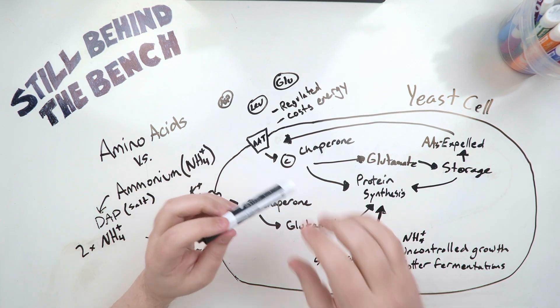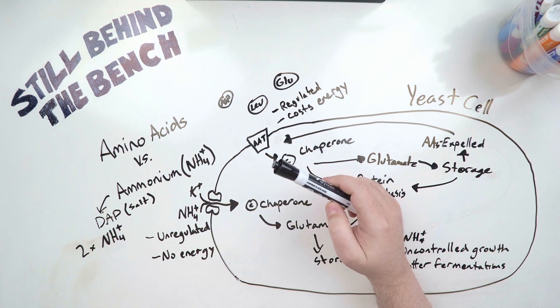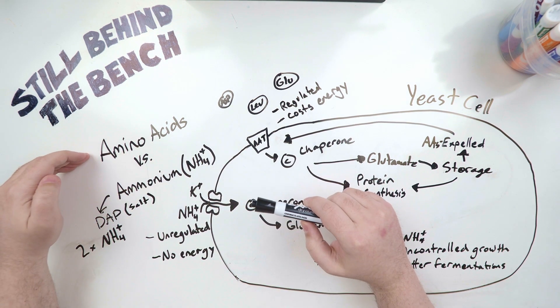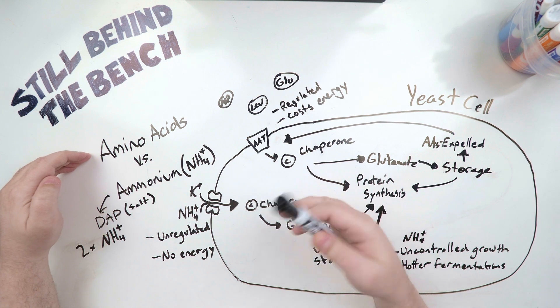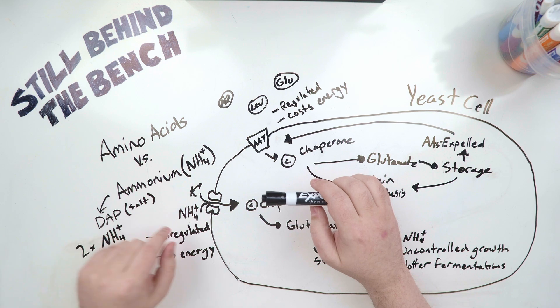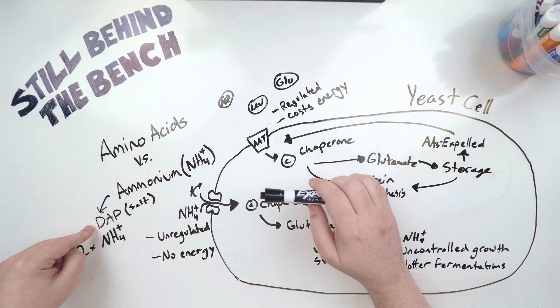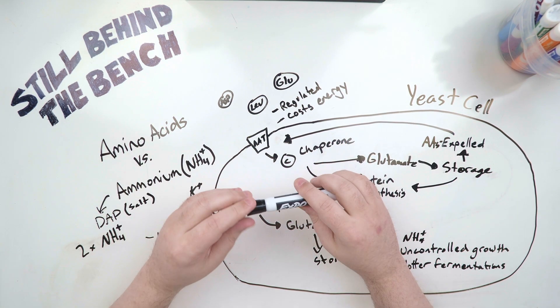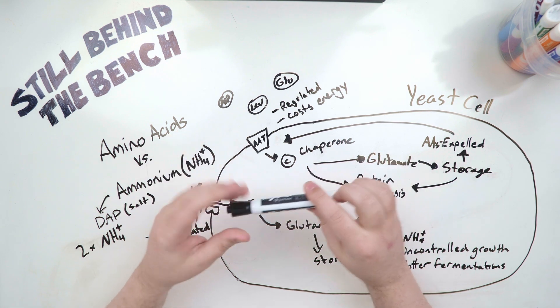There are generally two main sources of nitrogen that you'll ever add as a supplement. It'll be as amino acids, generally a varied mix of them like with a Fermaid product, or you'll add it as ammonium ions, generally in the form of diammonium phosphate or DAP. But what's the difference between amino acids and ammonium in terms of how the yeast handles it?